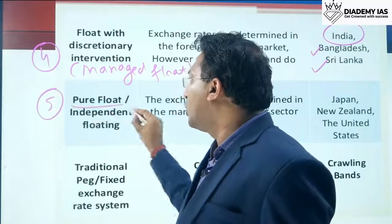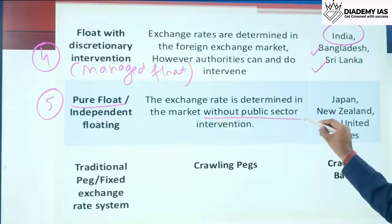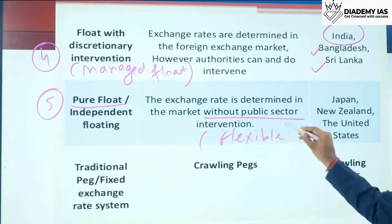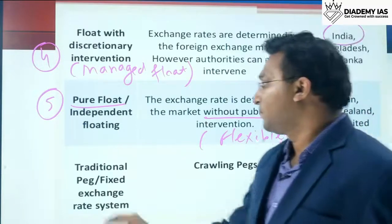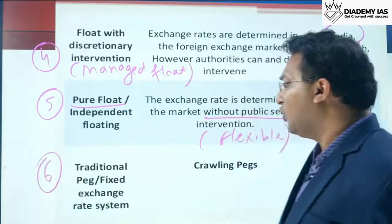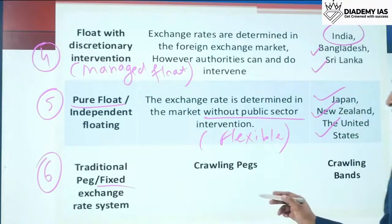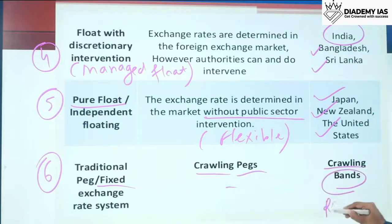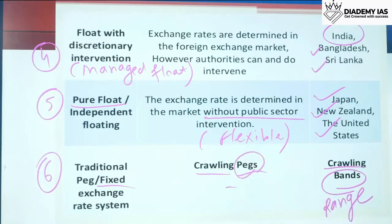Fifth is pure float or independent floating: the exchange rate is determined in the market without any public sector intervention. Countries like Japan, New Zealand, and the USA practice this flexible system. Sixth is the traditional peg or fixed exchange rate system, which includes crawling pegs and crawling bands. A band means there is a range with an upper and lower limit; a peg means the rate is under the fixed exchange rate system. This system is not in use now.